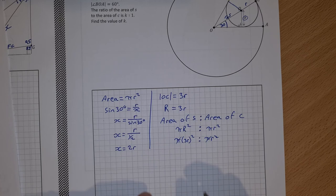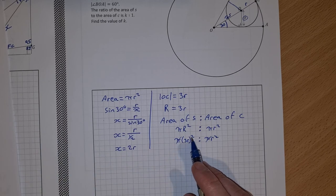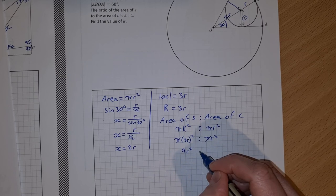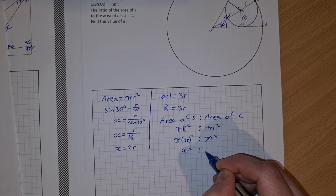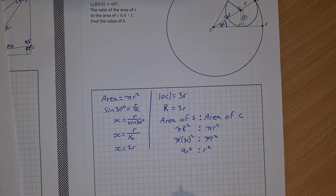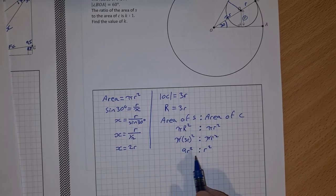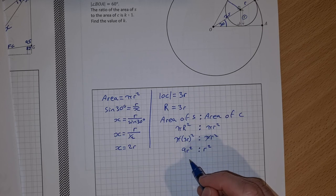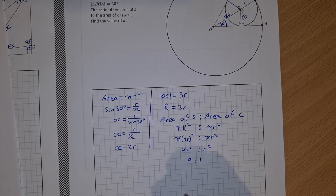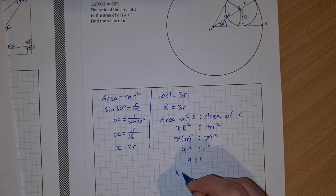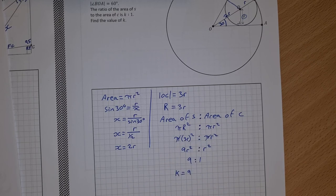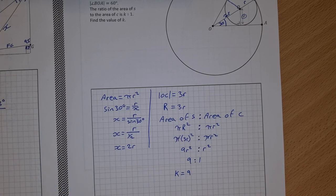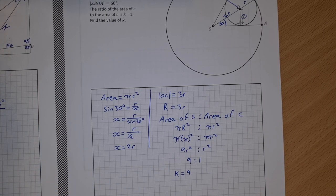Now I'm going to divide across by the pi there, and now I have 3r squared is 9r squared to r squared. So the ratio then is 9r squared to r squared, so that's 9 to 1. So that means k is equal to 9. Okay, that's Question 3. If you have any questions, just ask in the comments below.